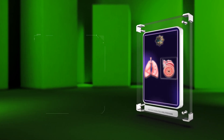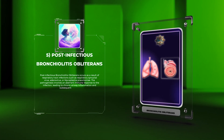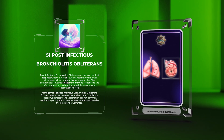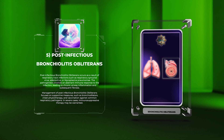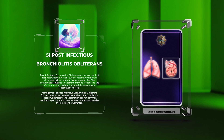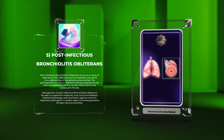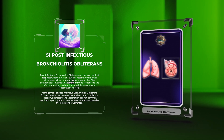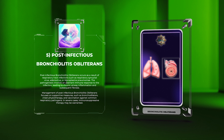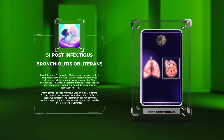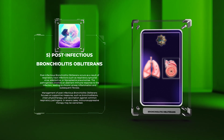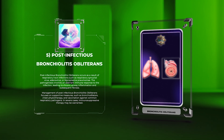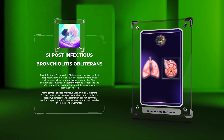Post-infectious bronchiolitis obliterans occurs as a result of respiratory tract infections such as respiratory syncytial virus, adenovirus, or mycoplasma pneumoniae. The pathogenesis involves an aberrant immune response to the infection, leading to chronic airway inflammation and subsequent fibrosis. Management of post-infectious bronchiolitis obliterans focuses on supportive measures such as bronchodilators, chest physiotherapy, and vaccination against common respiratory pathogens. In severe cases, immunosuppressive therapy may be warranted.